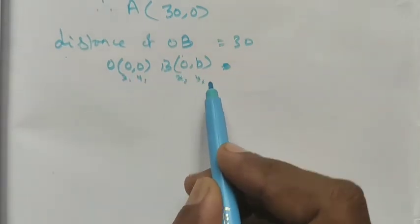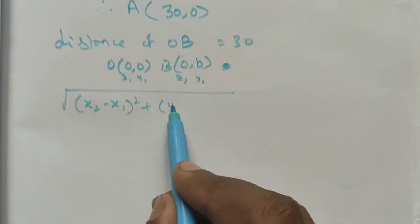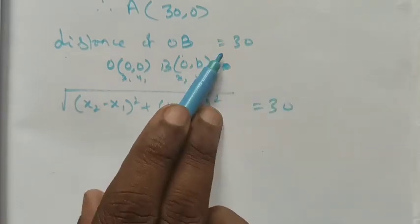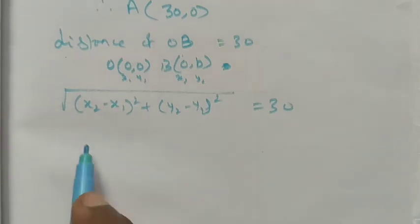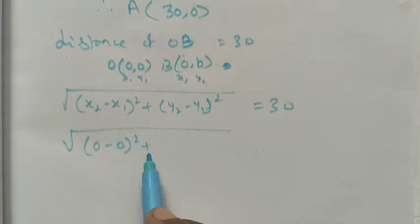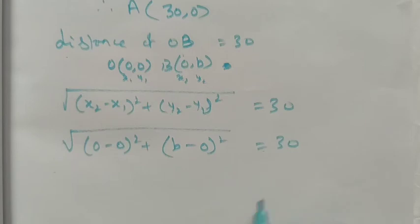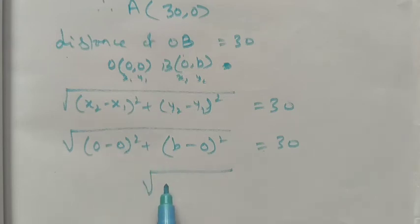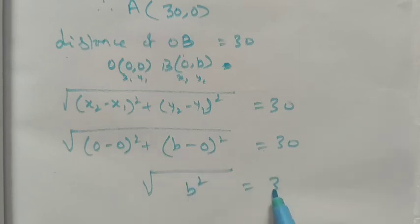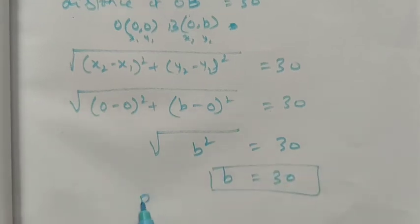For distance OB, using O as (x1, y1) = (0, 0) and B as (x2, y2) = (0, b): the square root of (0 minus 0) squared plus (b minus 0) squared equals 30. So the square root of b squared equals 30, giving b equals 30. Therefore point B is (0, 30).